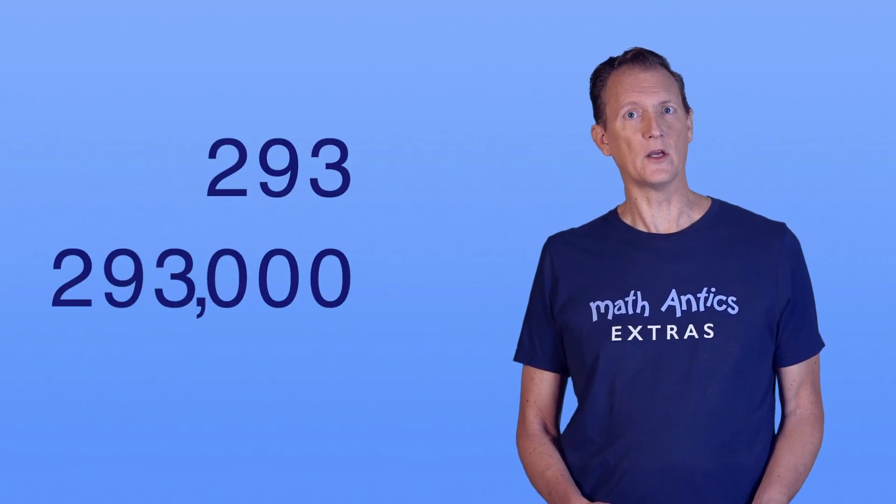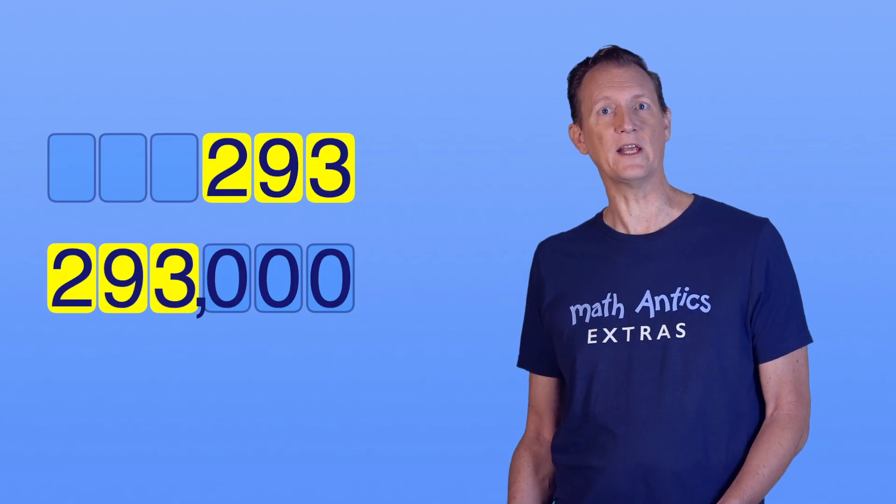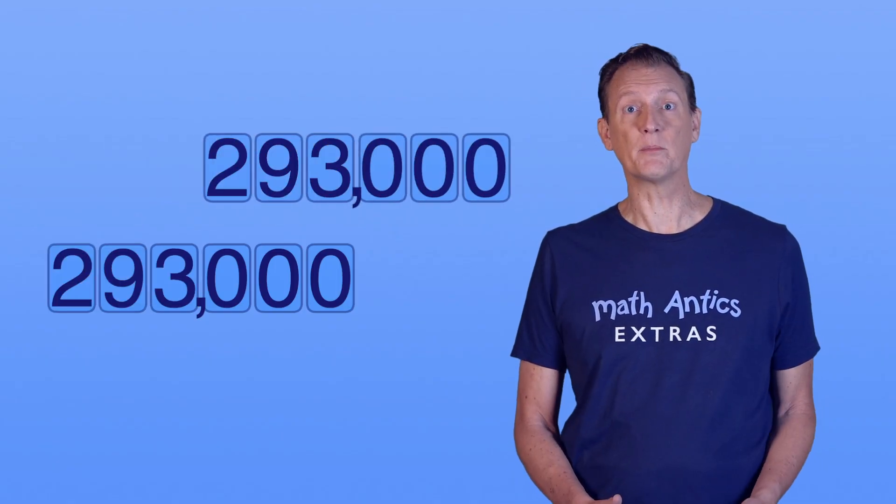Well, when we stuck the zeros onto the right of 293, what we were really doing was changing which number places the 2, the 9, and the 3 were in. It's like we shifted the number places to the right.